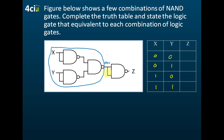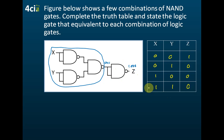We also learned that when a NAND gate has its two inputs combined together, it becomes a NOT gate. Therefore the output will become 1, 0, 0, 0. So the output here is 1, 0, 0, 0. If you study this carefully, you will find that this is the truth table for a NOR gate. Therefore, the equivalent gate is the NOR gate.